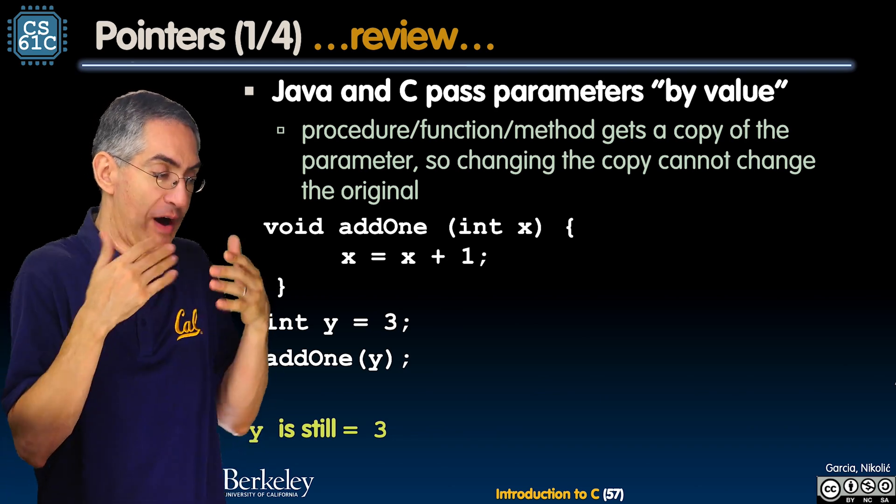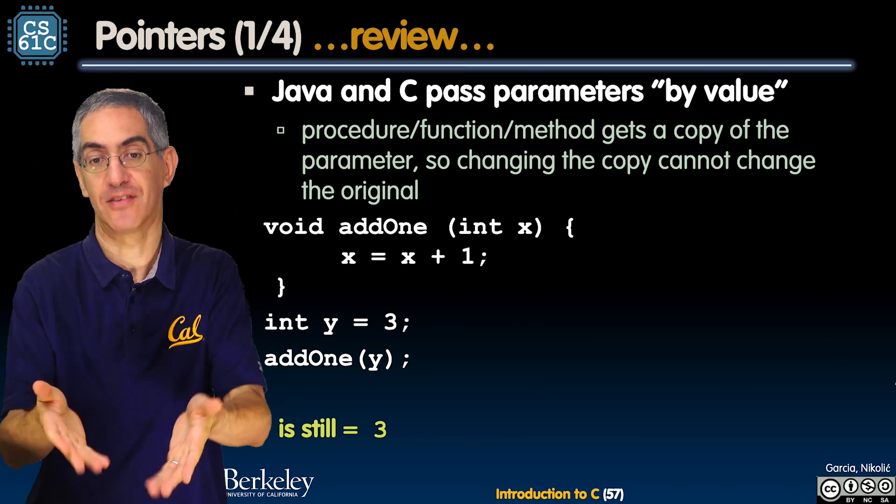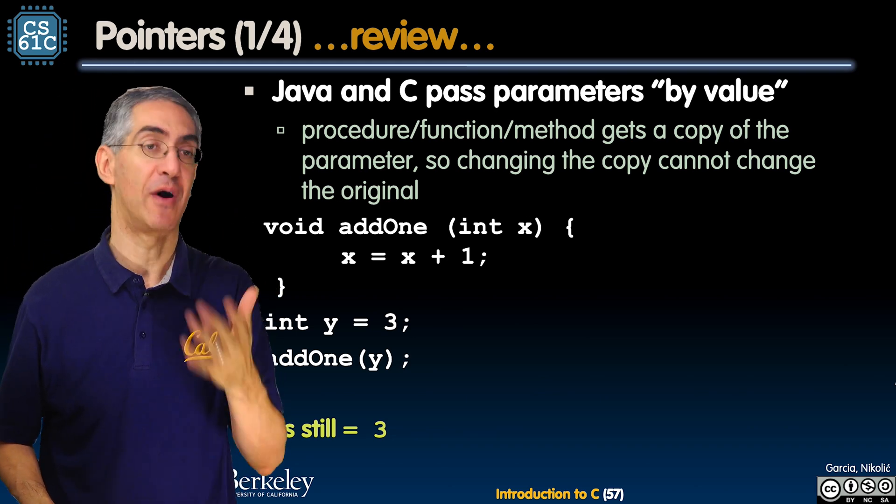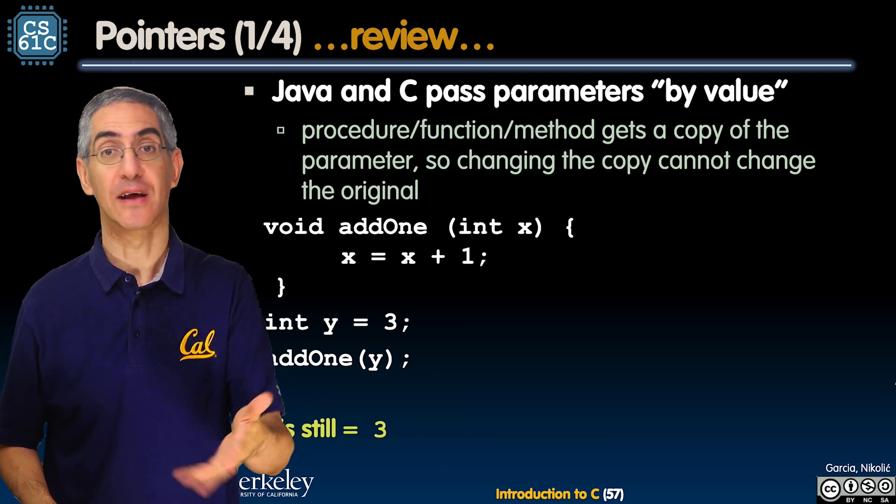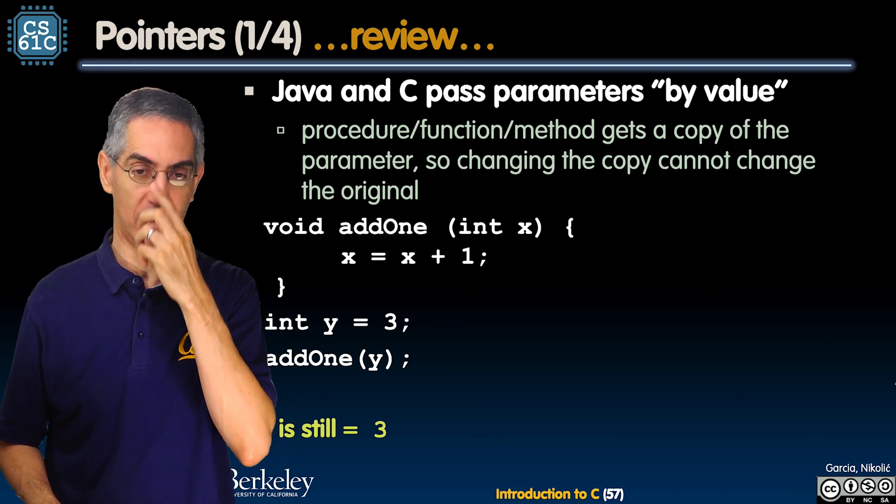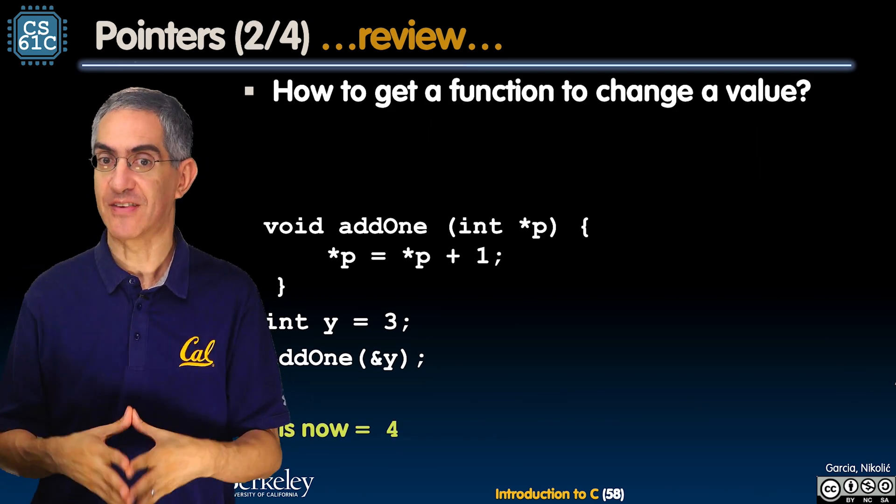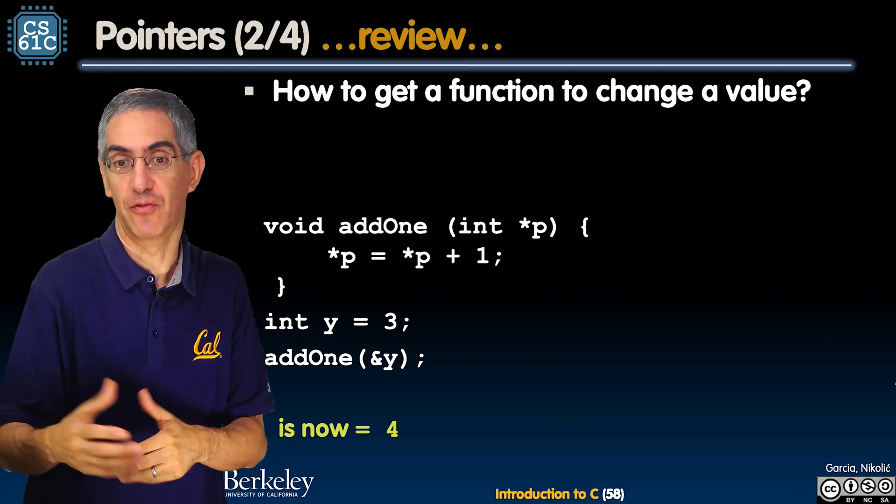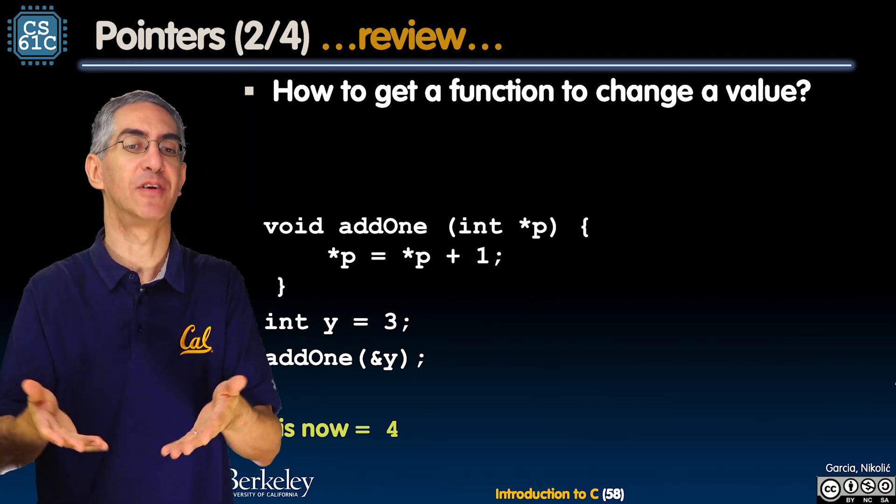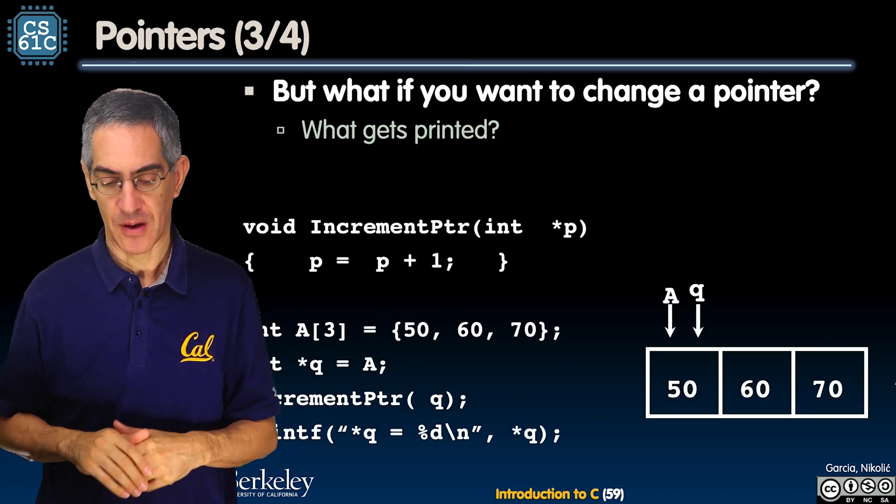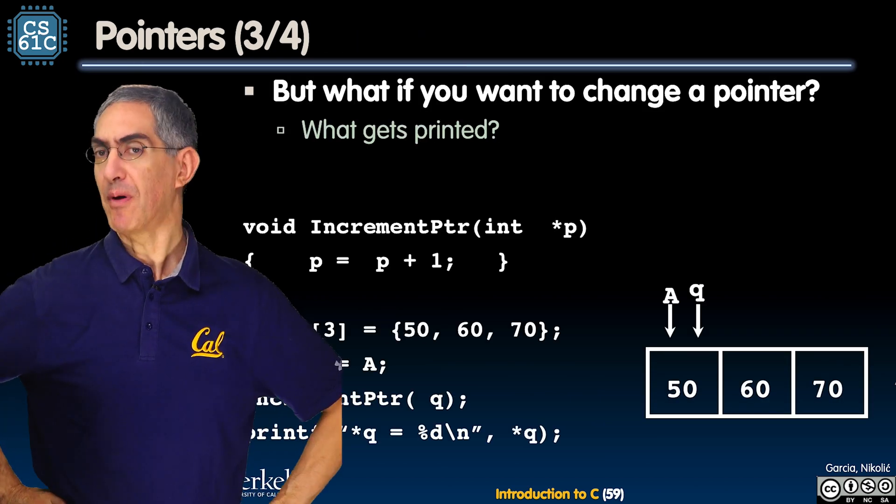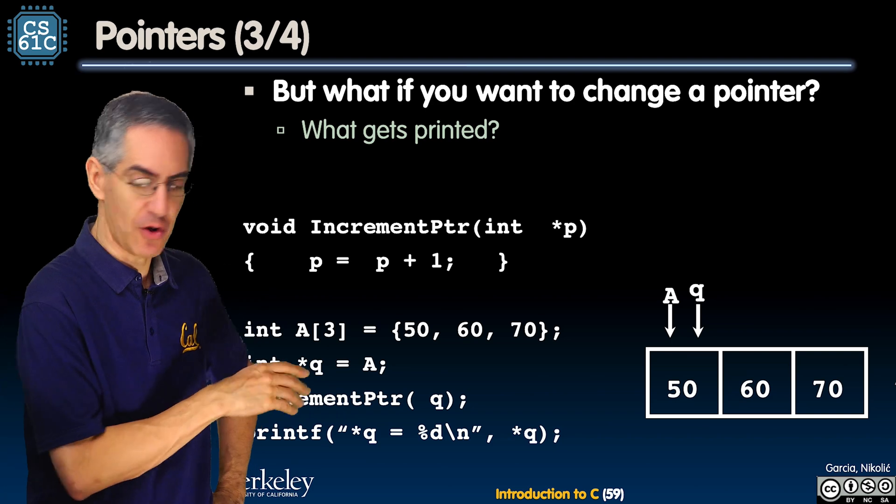So you saw this as review - we saw this maybe last lecture. If I have a subroutine add_one and I have Y declared outside that scope and I pass in Y, Y is still in Y - Y is three initially, add_one is not going to affect Y, it's still going to be three after the call. The way you fix it is you pass in the address of Y and now that pointer can manipulate Y and when it's all done Y is now four.